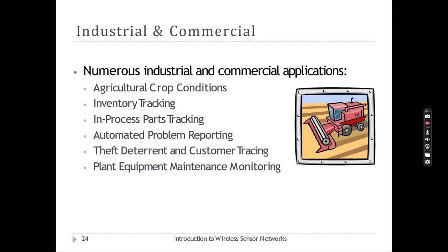Wireless sensor networks are also used for industrial and commercial purposes. Agricultural crop conditions can easily be identified, inventory tracking and in-process parts tracking in manufacturing places can be done. Automated problem reporting, theft deterrent, customer tracing, and plant equipment maintenance monitoring can all be done with the help of sensor nodes that collaboratively work and report findings.